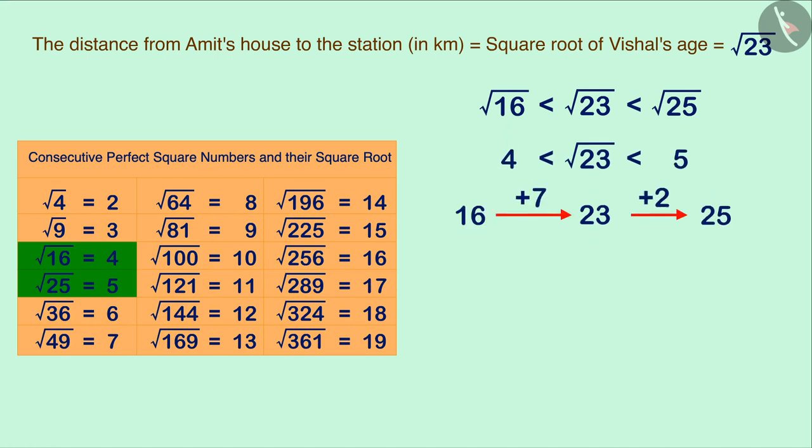Here, we observe that 23 is far from 16 but is closer to 25, which we can verify by their difference. Here, we can say that the square root of 23 will be closer to 5 rather than 4.